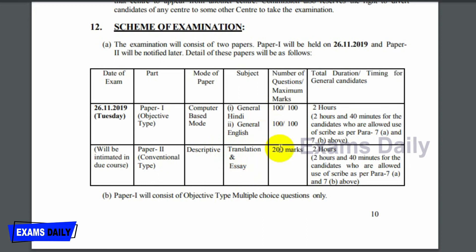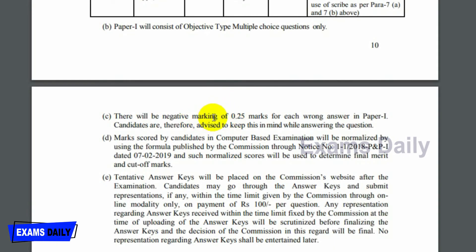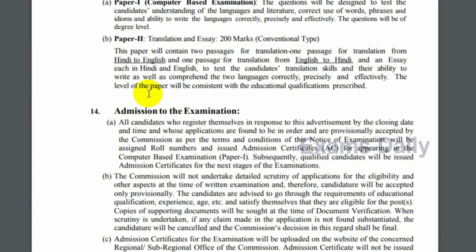Paper 2 is a conventional descriptive type covering translation and essay. The maximum marks are 200 and the total duration is 2 hours. Below the tabular column, details about negative marking and the indicative syllabus are provided. Study materials will be available on the Exams Daily website.